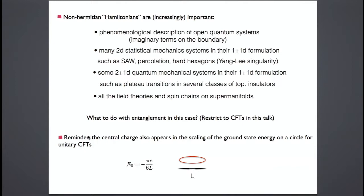This is a very bizarre world where, for instance, probability may be conserved in quantum processes, but some probabilities may be positive and others negative, and weirder things could occur. So the question is: is entanglement useful in any of these situations? What I will do today is simply consider some very simple examples of non-Hermitian quantum spin chains and see what we can do with entanglement in this case, restricting to CFTs.